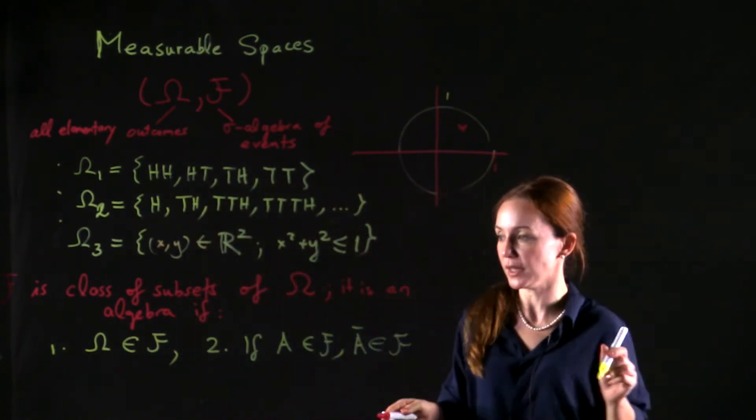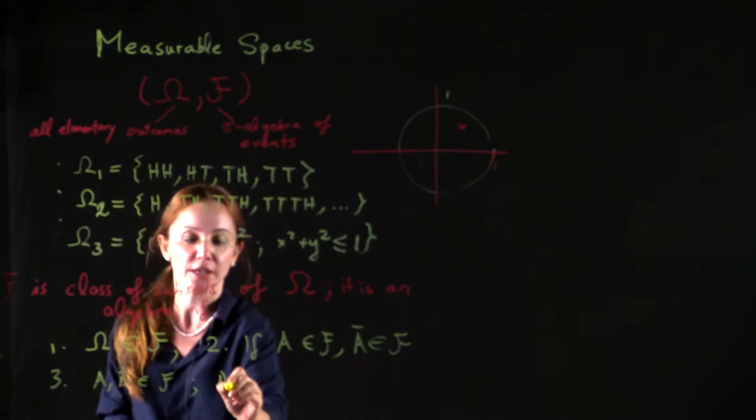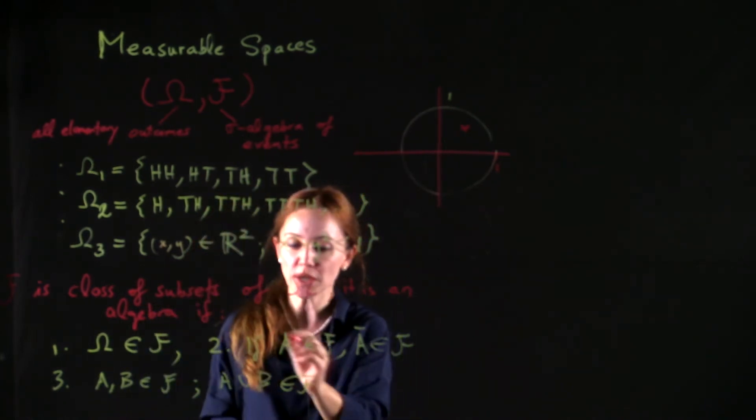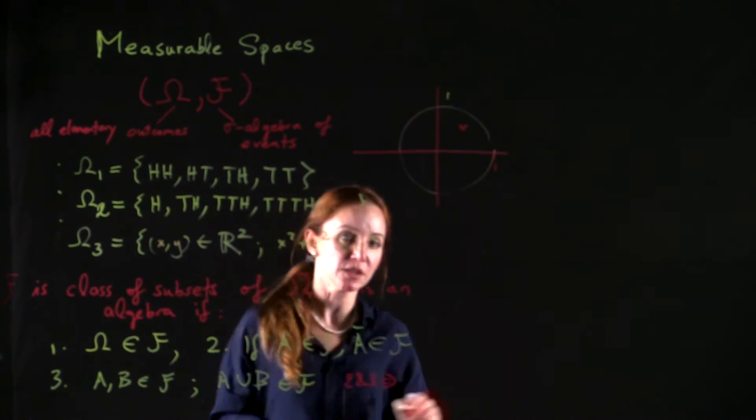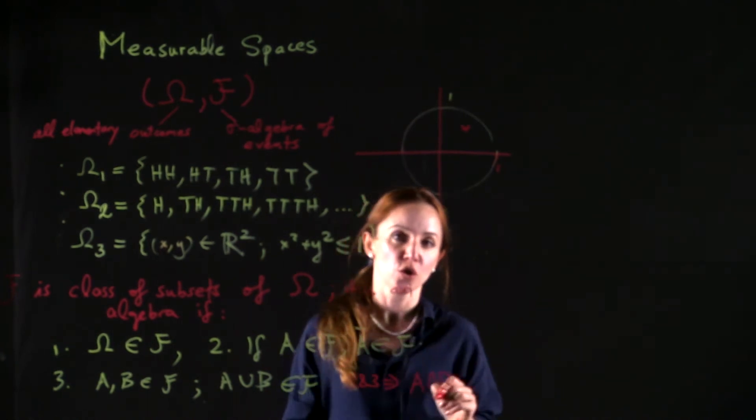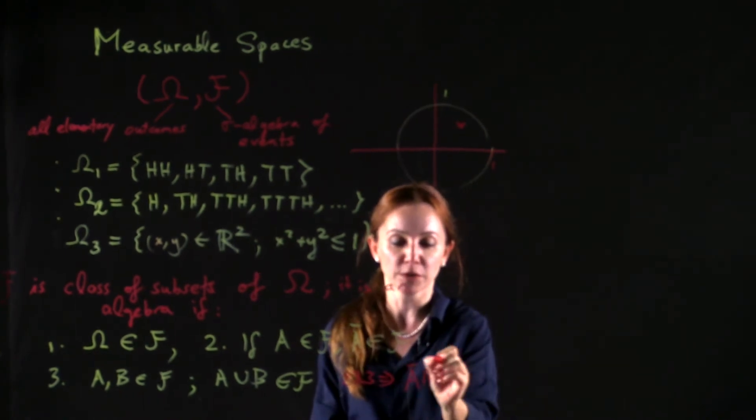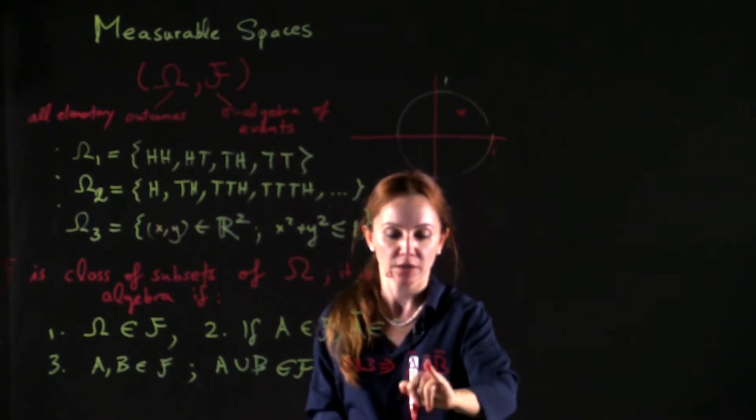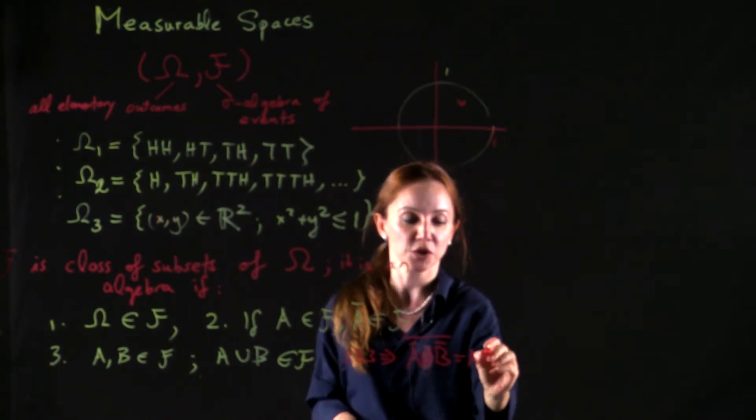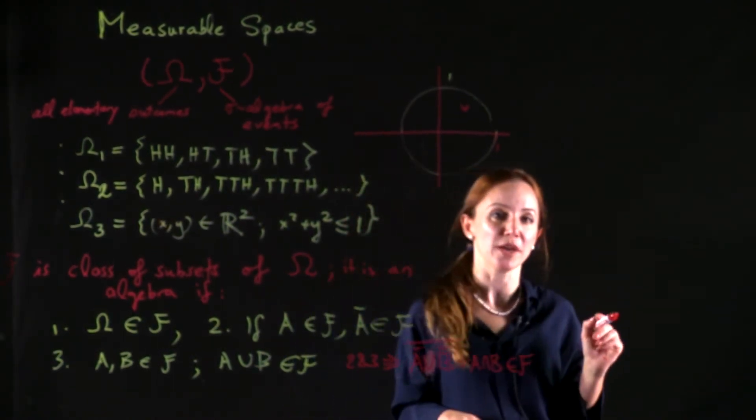And thirdly, if A and B are in F, then A union B must be in F. But from 2 and 3, you can easily see that if A and B are in F, then A intersection B must also be in F. Why? Because A intersection B is nothing but the complement of A complement union B complement. So A intersection B is in F as well.